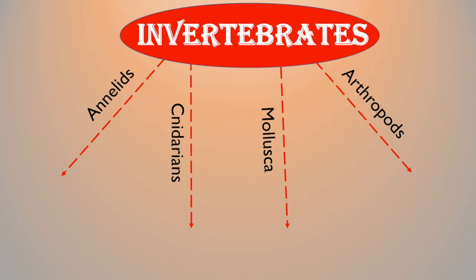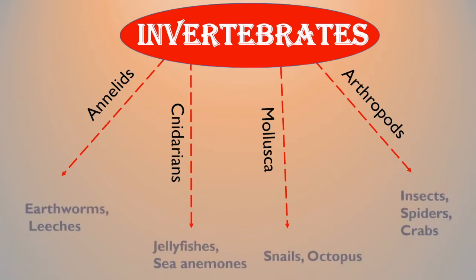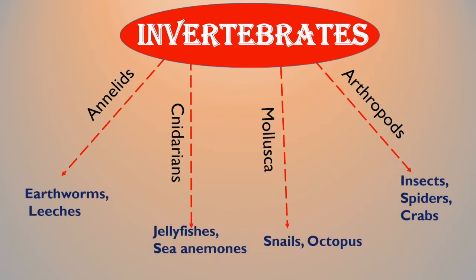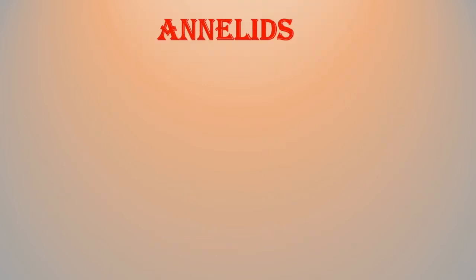Invertebrates are classified as annelids, cnidarians, mollusca, and arthropods. Examples of animals of each group are shown under their respective class. Let's learn this classification in more detail.